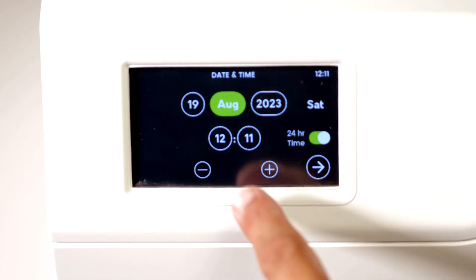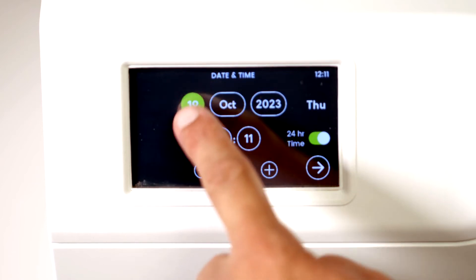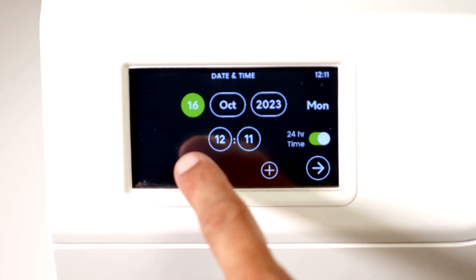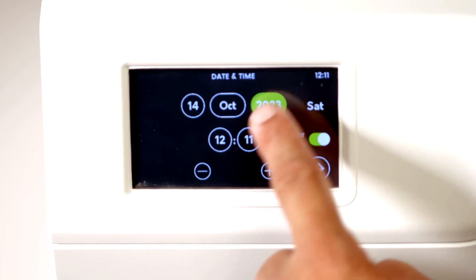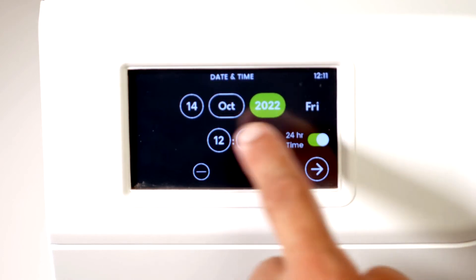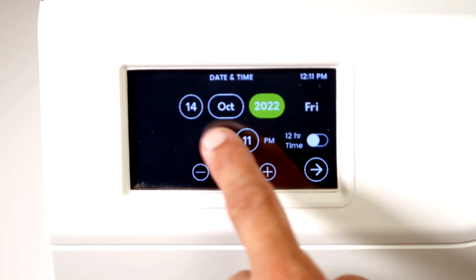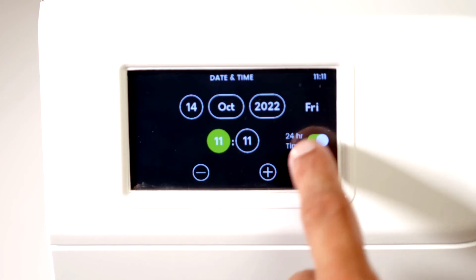From the commissioning screen, press the arrow. On the next screen, the date and time can be adjusted to suit your time zone. Touch the screen on the date or time to change it. The time can also be changed to 24 hour time.